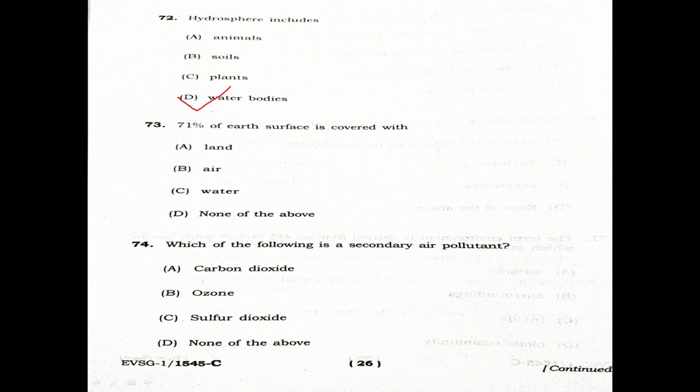Question 73: 71% of Earth's surface is covered with. Option A: Land. Option B: Air. Option C: Water. Option D: None of the above.